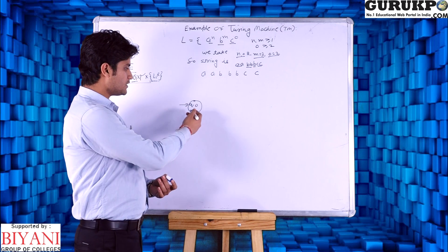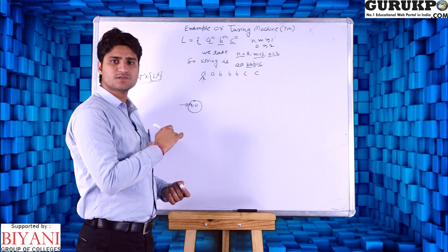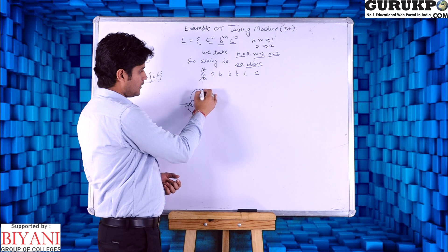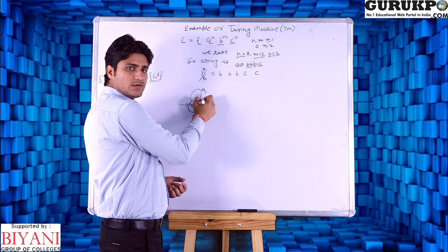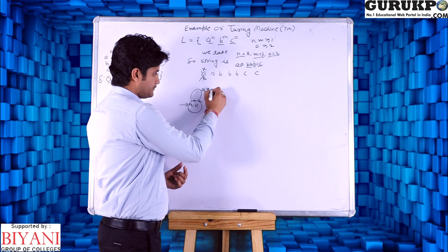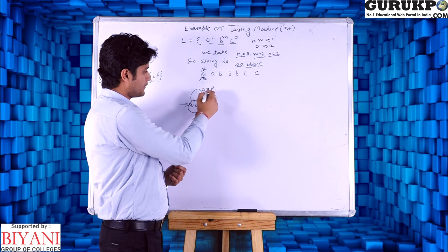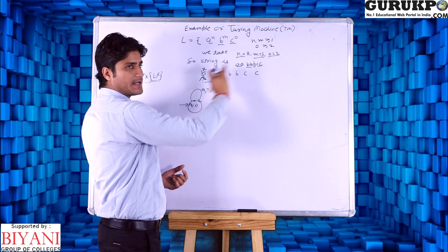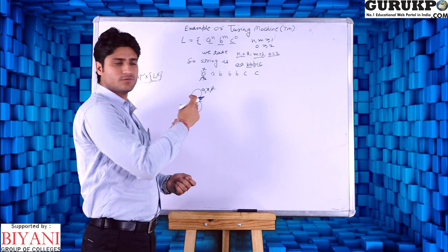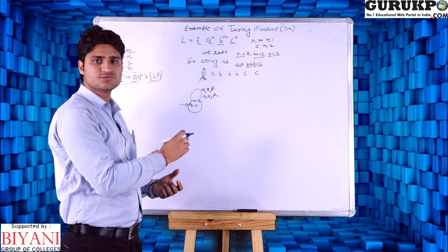Starting from initial state Q0, we are reading the input A. A will be replaced by X and the movement direction is right. The first read symbol A will be replaced by X and the moving direction will be right. When we move from the finite control, the next symbol A will be bypassed.